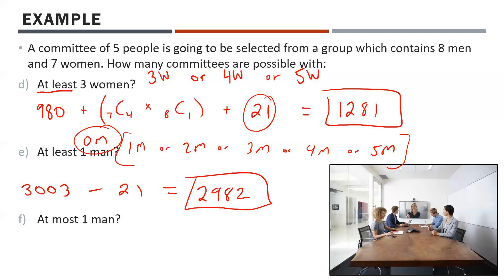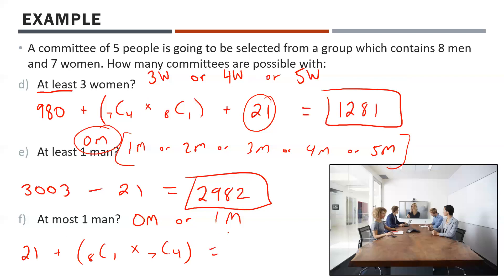What about at most one man? That means zero men or one man. Zero men is 21. One man means 8C1 times 7C4 — choosing one man from eight and four women from seven. That gives 301, so 21 plus 301 equals 322... actually throwing it in the calculator gives 301 possibilities for one man. Adding to 21 gives the total.